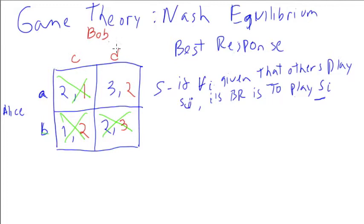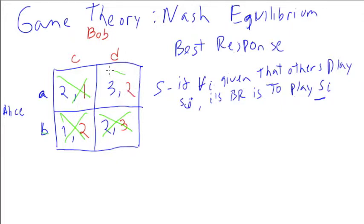That leaves us with AD. If Bob plays D, Alice's best response is to play A, since it's either 3 or 2. And if Alice plays A, Bob's best response is to play D, since he's looking at 1 or 2 and goes for 2. So AD is a Nash equilibrium — specifically a pure Nash equilibrium.